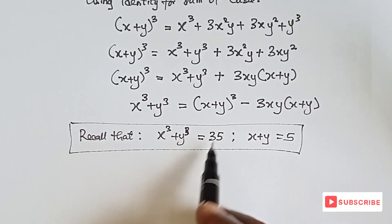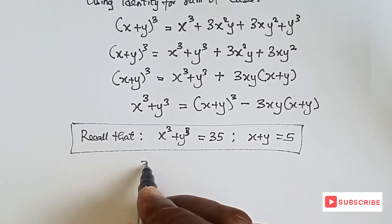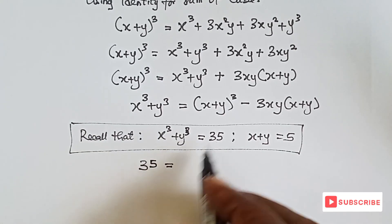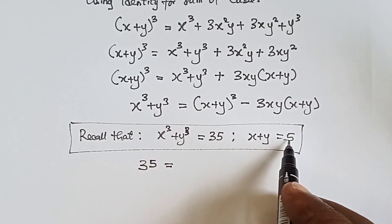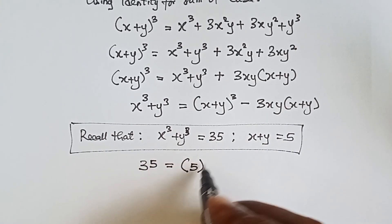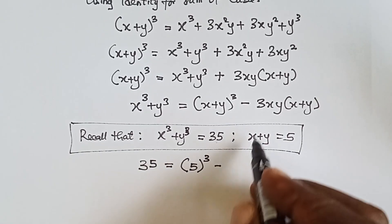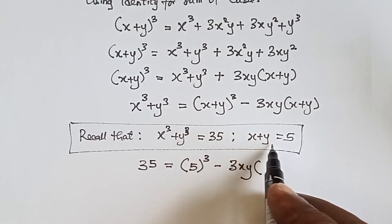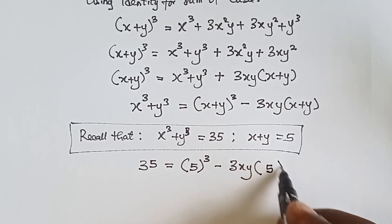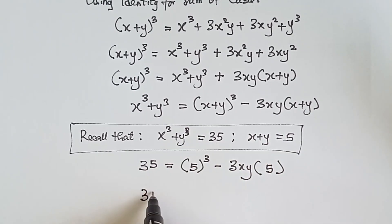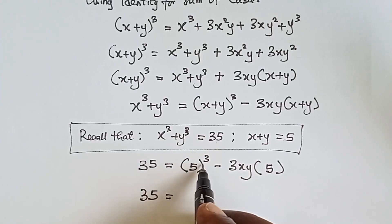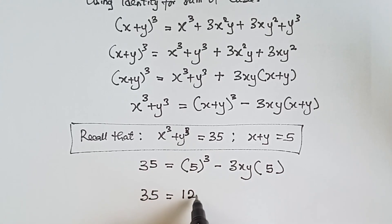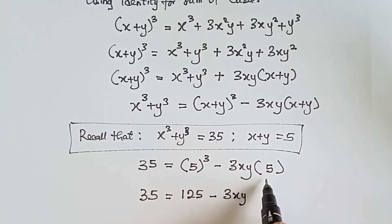From here: x cubed plus y cubed is 35, and x plus y is 5, so we have 35 equals 5 raised to power 3 minus 3xy times 5. Five to the power three is 125, so we have 35 equals 125 minus 15xy.